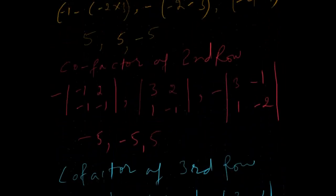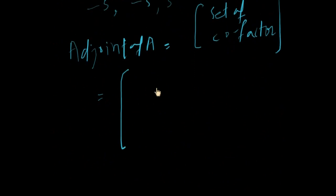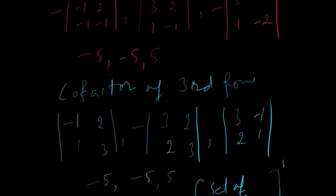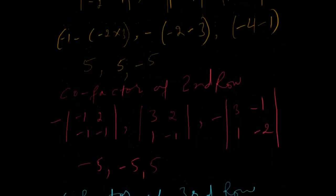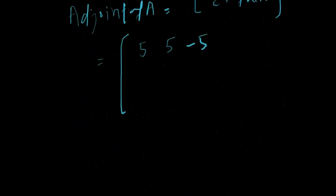The cofactor of the first row is 5, 5, minus 5, 5, 5, minus 5. The cofactor of the second row is minus 5, minus 5, 5, minus 5, 5.